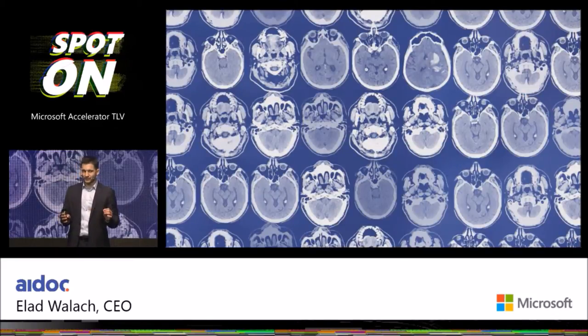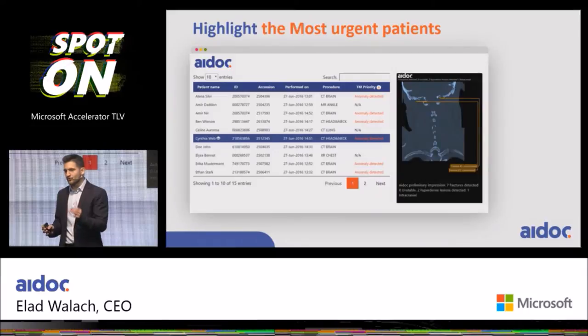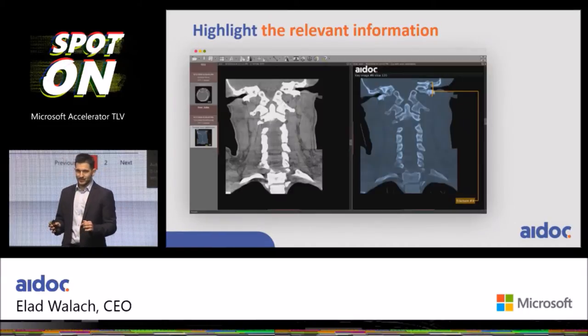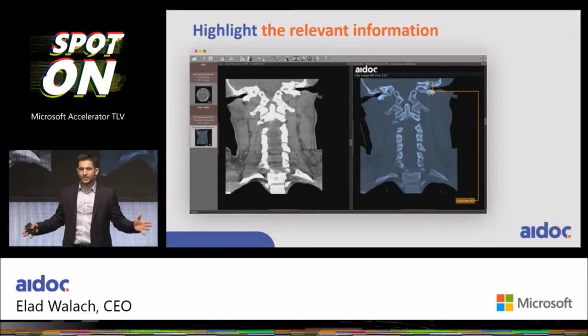So we built something different — something to enhance their day-to-day productivity. Our software analyzes each incoming scan and from the mound of data detects the most relevant visual abnormalities. Then we can help the radiologists focus. We begin by highlighting the most urgent patients, those that really need to be diagnosed right now. Then we assist the radiologist through their reading by jumping directly to the right slides, marking the locations, and bringing forth the relevant information for the diagnosis.